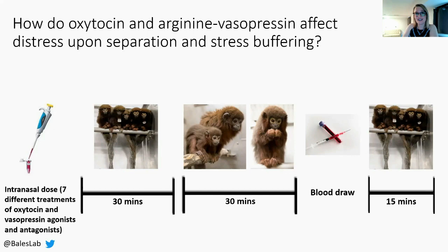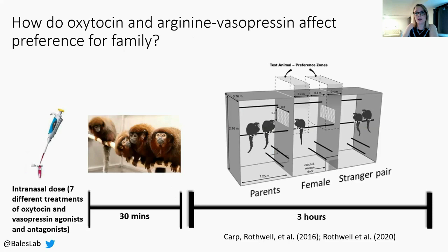To answer our second question, 10 of the same females from the previous experiment underwent preference tests. Females were approximately 18 to 20 months of age, and all subjects went through seven parent preference tests. At the start of each test, subjects received an intranasal dose of one of the seven treatments. Tests lasted approximately three hours and we live-scored five 30-minute blocks. The subject's parents were on one side of the testing apparatus and an unfamiliar pair of adult titi monkeys was on the other side, with our subject in the middle. The side the animals were on alternated between tests, and treatments were counterbalanced. We quantified time spent in proximity to parents and the preference zone of strangers, as well as time spent touching the grate of parents and strangers.